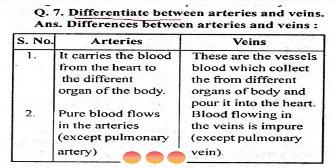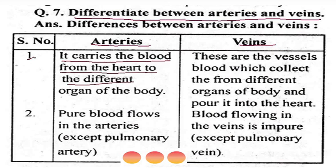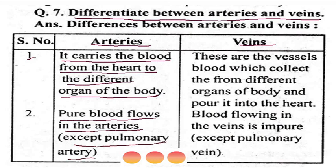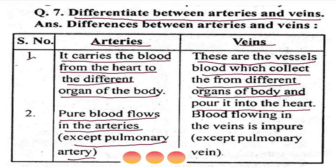Now come to the differences between arteries and veins. Arteries carry blood from the heart to the different organs of the body, and pure blood flows in arteries — except in the pulmonary arteries, which carry impure blood. Veins are the vessels which collect blood from different organs of the body and pour it into the heart. Blood flowing in the veins is impure — always remember it is impure, except in the pulmonary veins.